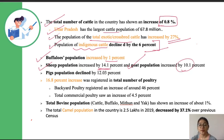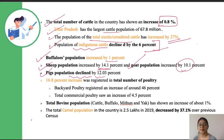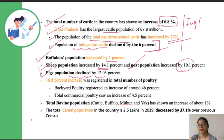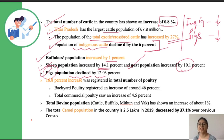Sheep population recorded an increment of 14.1 percent and goat population increased by 10 percent. The pig population declined by 12 percent. To summarize what to remember: the total livestock population increased by 4.6 percent. Almost all species showed increments compared to 2012 — by varying percentages — except for indigenous cattle, which declined, and the pig population, which also declined. Make a mental note: indigenous cattle and pigs showed a decline; all other species showed an increment.